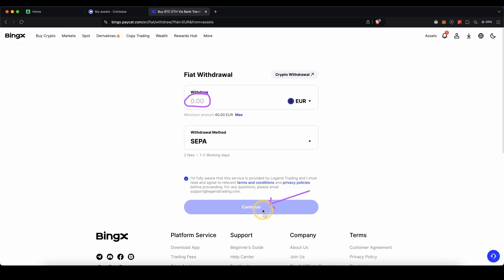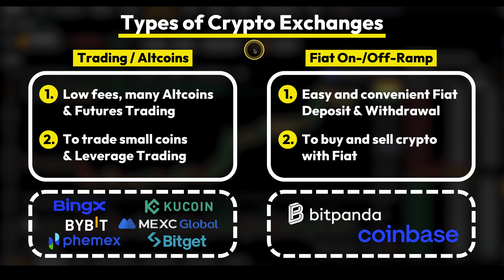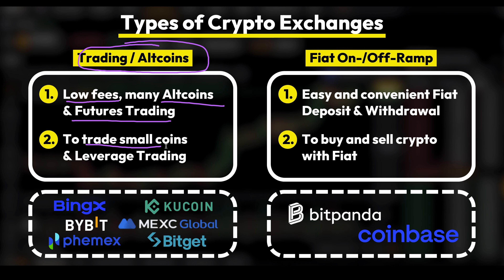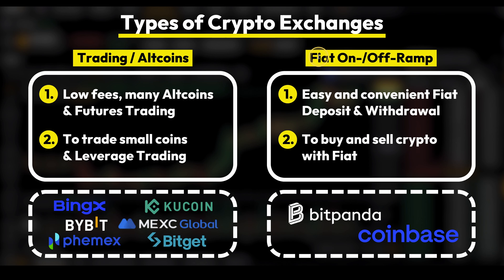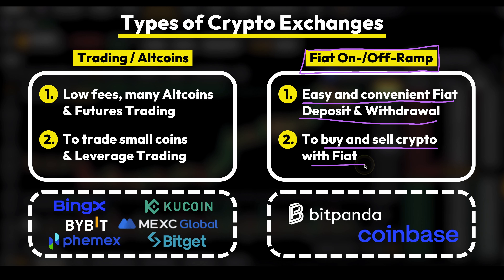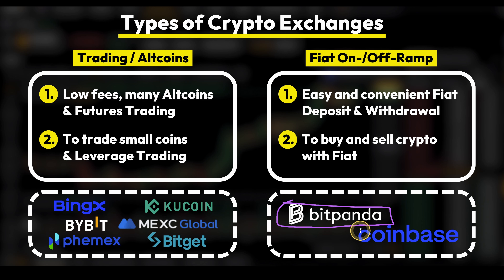In any other case I will show you the second method which will definitely work. Here is a quick overview of different types of crypto exchanges. On the left side we have the typical trading exchanges which typically have very low fees, many different coins, and are mostly used for futures trading — perfect for trading smaller coins and using leverage. On the right side we have the so-called fiat on and off-ramp exchanges, which have the benefit of very easy and convenient fiat deposit and withdrawal methods whenever you want to interact with your own bank account in your local currency such as euro, British Pound, or US Dollars. My favorite examples are Bitpanda, my personal favorite, and Coinbase as a great alternative.